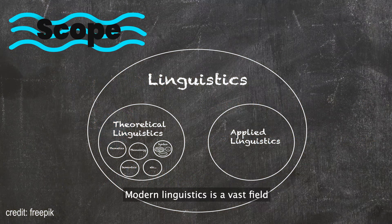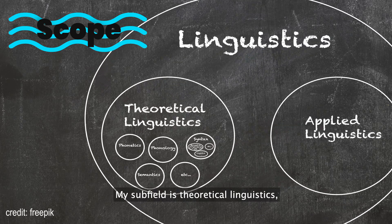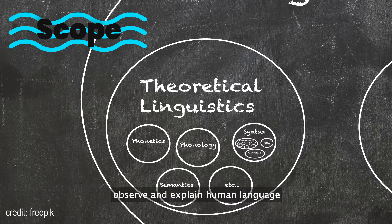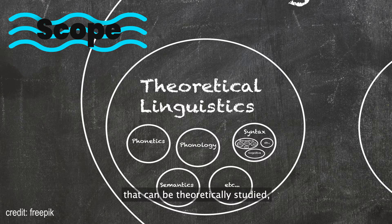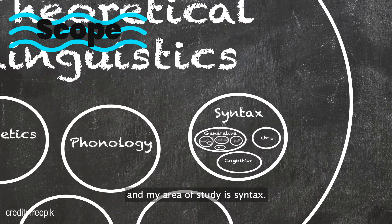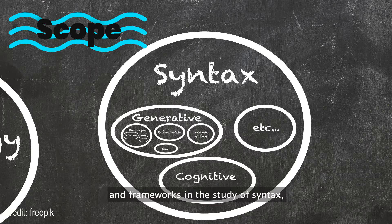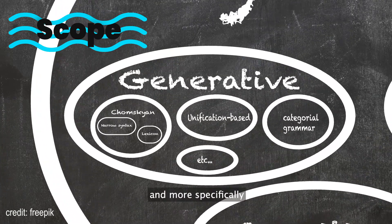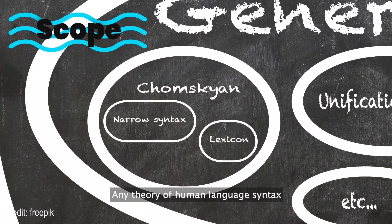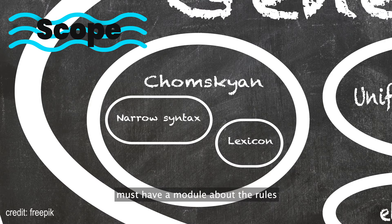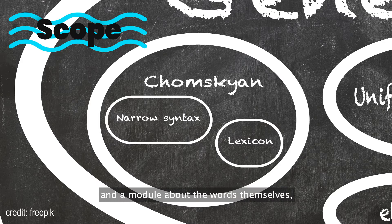Modern linguistics is a vast field encompassing many subfields. My subfield is theoretical linguistics, which means my job is to observe and explain human language as a natural phenomenon. My area of study is syntax — the component of our language capacity that allows us to assemble individual words and phrases into well-formed sentences. There are a number of theoretical schools and frameworks in the study of syntax, and the framework I'm working with is generative grammar, and more specifically the Chomskyan school of it. Any theory of human language syntax must have a module about the rules that assemble words into sentences, aka narrow syntax, and a module about the words themselves, aka the lexicon.